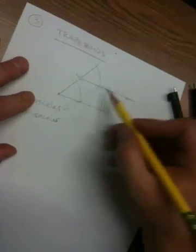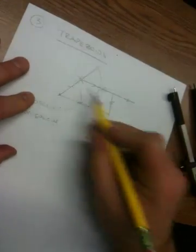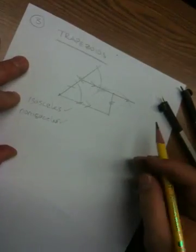I've now produced a trapezoid with these two sides of different lengths, thus a non-isosceles trapezoid.